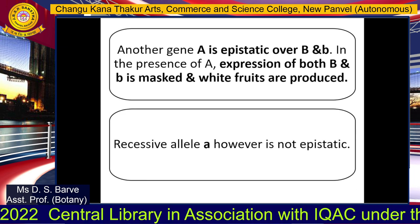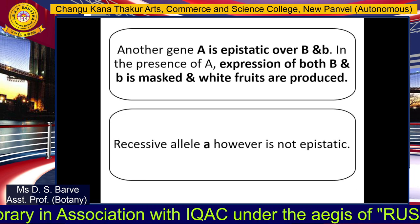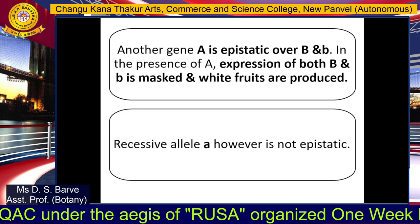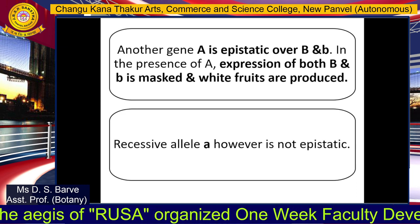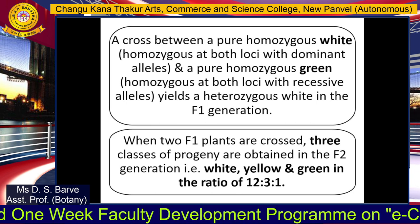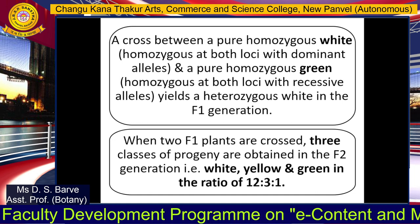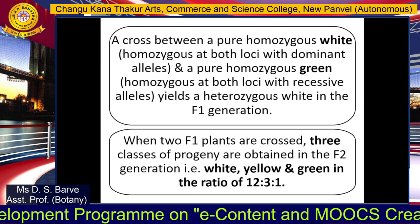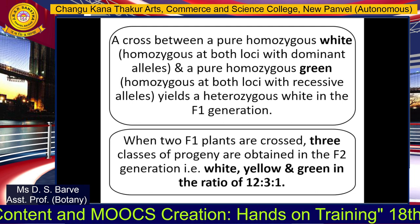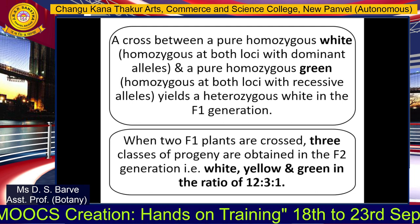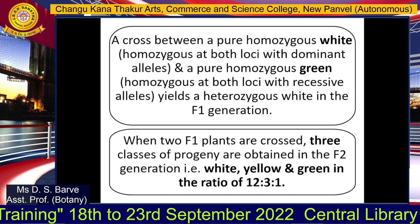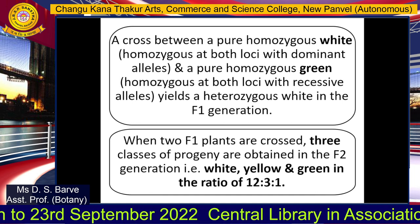However, the recessive allele small a does not show any kind of epistasis, meaning the presence of small a in the genotype will not influence the expression of fruit color controlled by gene B in any way. To understand this epistasis better, consider a cross between a pure homozygous Cucurbita plant with white fruits — homozygous dominant at both loci — and a pure homozygous plant with green fruits — homozygous recessive at both loci. This cross yields a heterozygous plant with white fruits in the F1 generation.